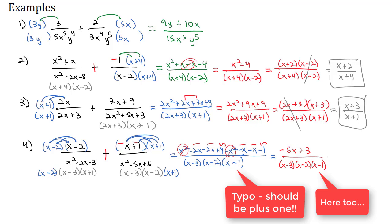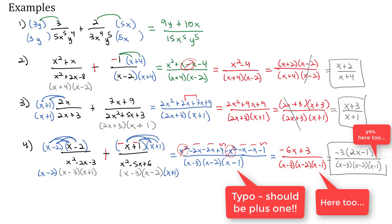To check if we can reduce, we factor the numerator by pulling out a negative 3, which gives negative 3 times 2x minus 1, over the common denominator of x minus 3 times x minus 2 times x plus 1. Nothing cancels, so that's the final solution. As always, check to see if your final answer can reduce.